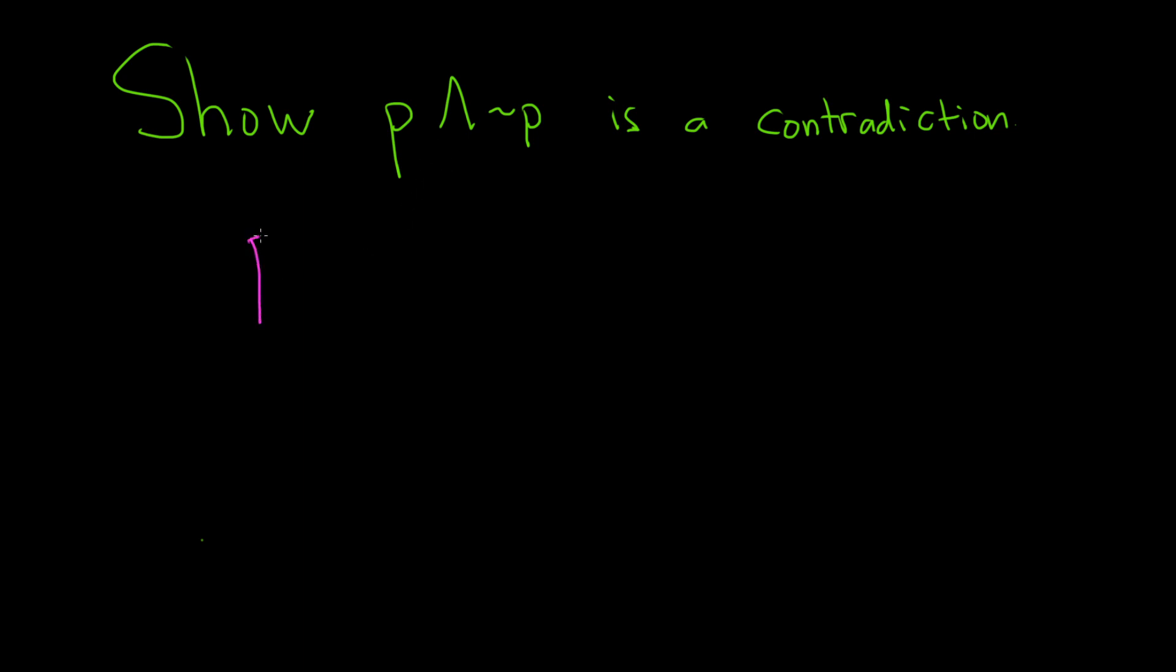So we'll start by listing the possible truth values for p. So p is either true or it's false.